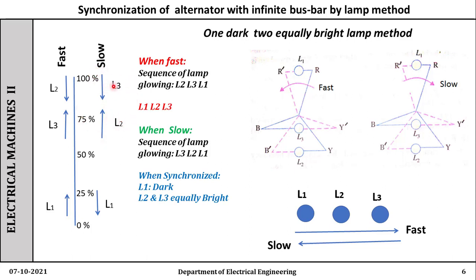These two lamps, L2 and L3, will be equally bright — the voltage across them will be equal somewhere in between, since L3 is decreasing from 100 percent and L2 is increasing toward it. When the incoming machine is slower, the sequence of lamp glowing is L3, L2, L1 — just opposite to the previous one. When to synchronize: when L1 is dark and L2 and L3 are equally bright, the operator has to close the synchronizing switch so that the incoming machine gets synchronized to the infinite bus bar.